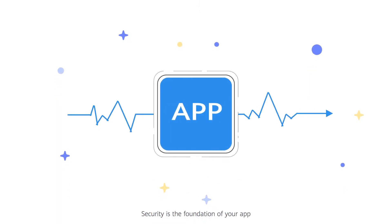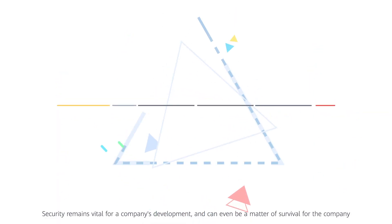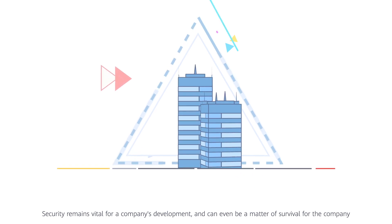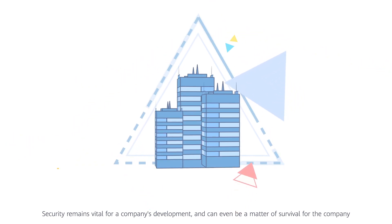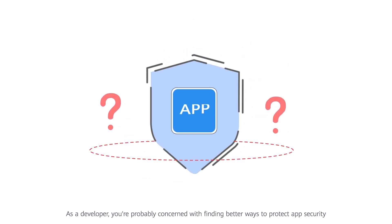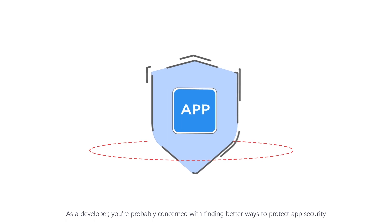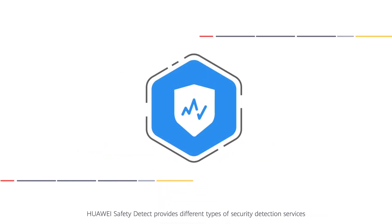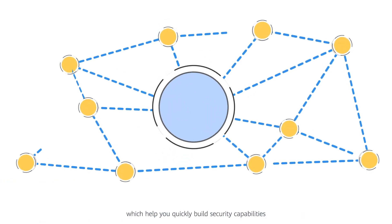Security is the foundation of your app. Security remains vital for a company's development and can even be a matter of survival for the company. As a developer, you're probably concerned with finding better ways to protect app security. Huawei Safety Detect provides different types of security detection services which help you quickly build security capabilities.